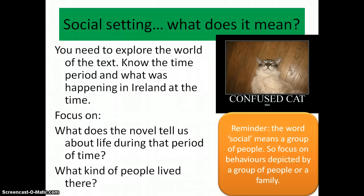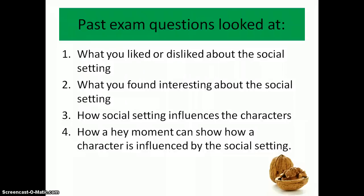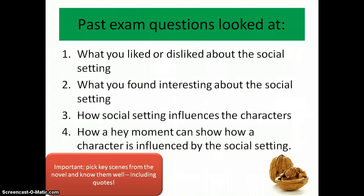Today I'm going to focus on three strands of social setting that I feel are most important — there are obviously others such as religion, but these three are the key ones. Before we go into the first strand, I want to show you past exam questions rephrased in a clearer way. The questions are: what you liked or disliked about the social setting; what you found interesting about it; how social setting influences the characters; and how a key moment can show how a character is influenced by the social setting. The most important thing is to include key scenes from the novel and know them well, including quotes.